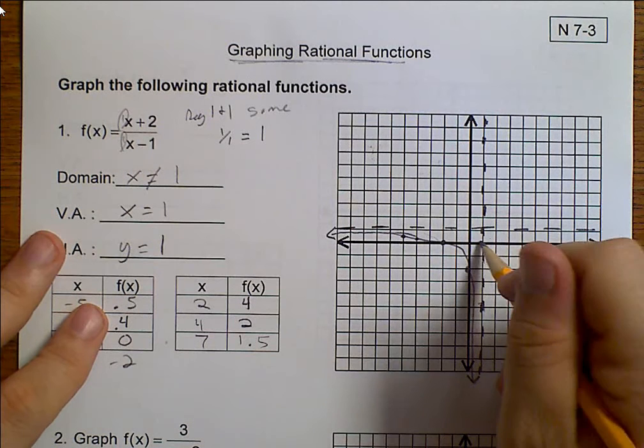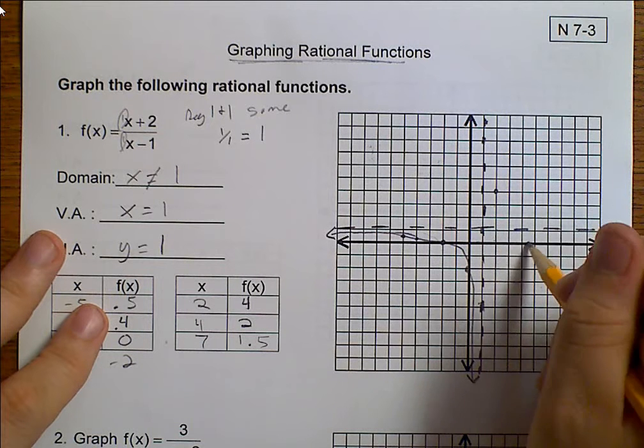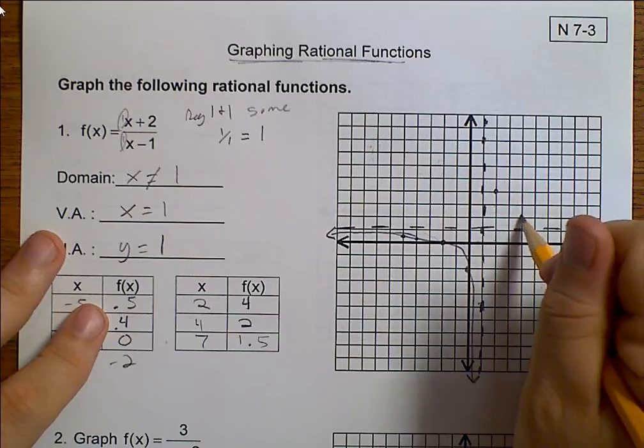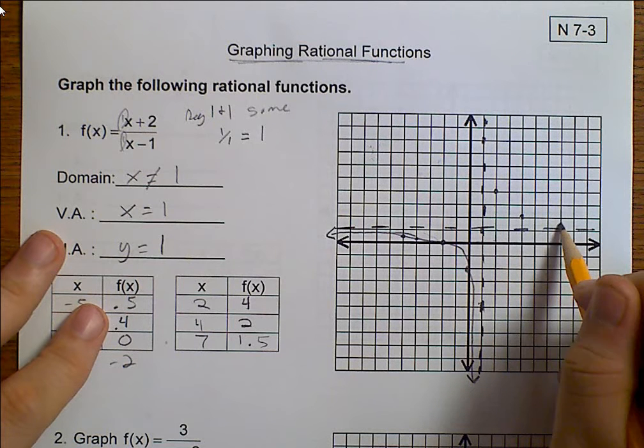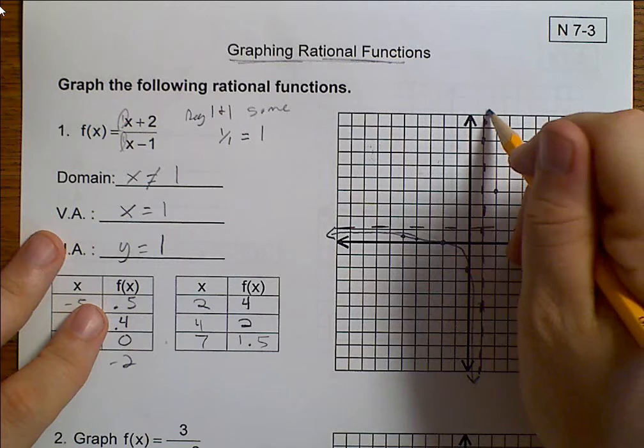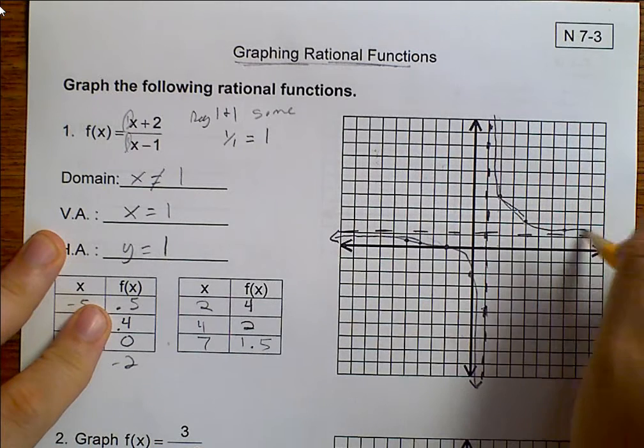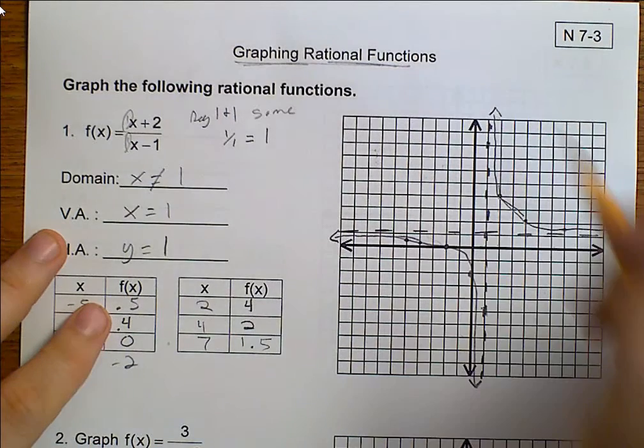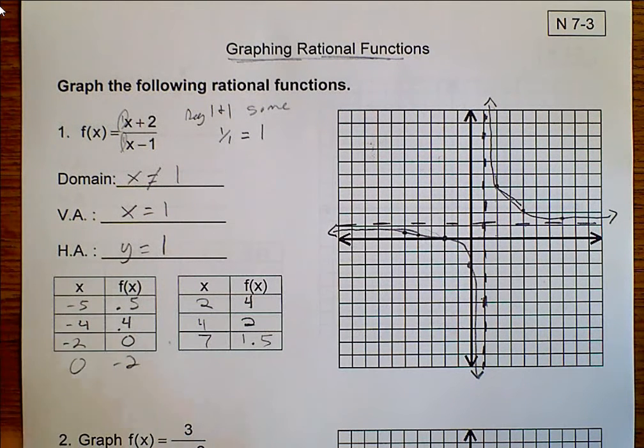On the other side, we have 2, 4 and 7, 1.5. And so here we're going to hug this asymptote, swing in, hit our points, and then hug that asymptote. Now, I don't particularly care what points you plot, so long as you plot these on the left-hand side of your asymptote, and these on the right-hand side of your asymptote. And your graph should hug the asymptotes.